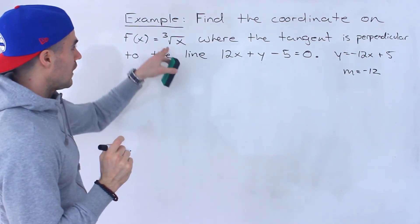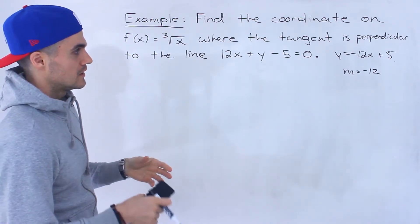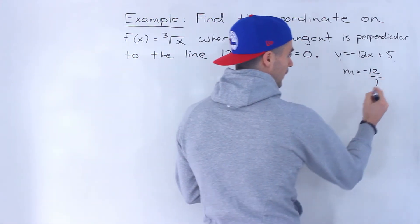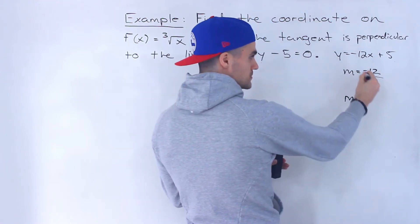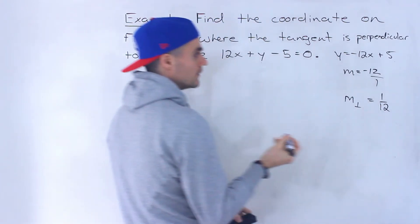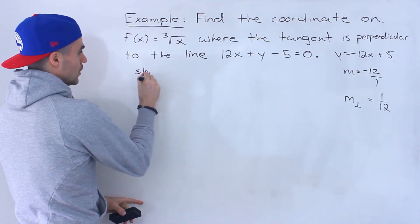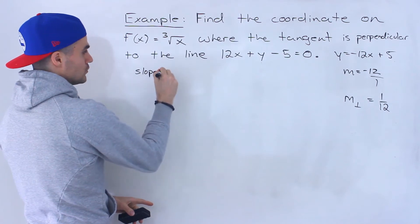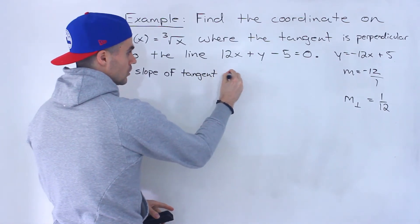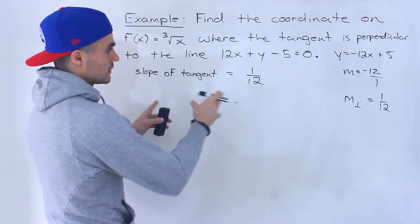However, we're trying to find the coordinate on this function, the third root of x, where the tangent is going to be perpendicular to this line. If the tangent is perpendicular to a line that has a slope of negative 12 — that's like negative 12 over 1 — a perpendicular slope would be the negative reciprocal of this. So we flip it and change the sign, ending up with 1 over 12. Another way this question could be worded: where does the slope of the tangent equal 1 over 12?